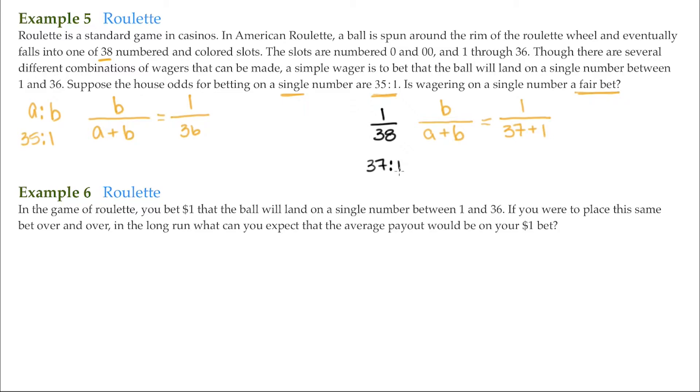And the true odds are not the same as the house odds. So this is not a fair bet. So what this says is that for every dollar you bet, according to the house, if you win, you're going to get $35 back. The true odds say that for every dollar you bet, if you win, you should be getting $37 back. So even when you win, the house is still keeping some of the money.